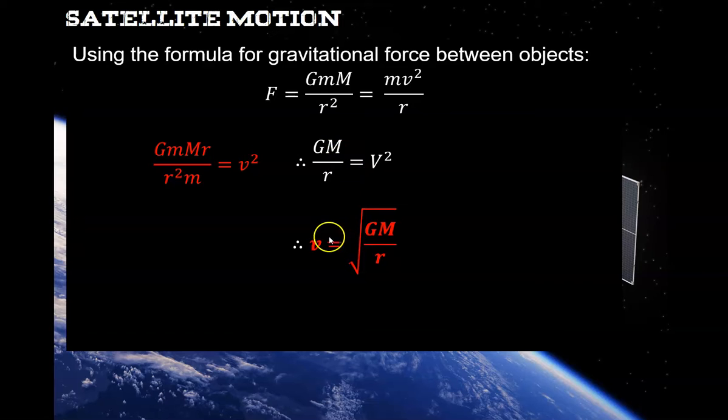I get that the velocity of a satellite, an object circling a planet, is just equal to the square root of GM/r: the gravitational constant times the mass of the big planet divided by the radius that it's circling.